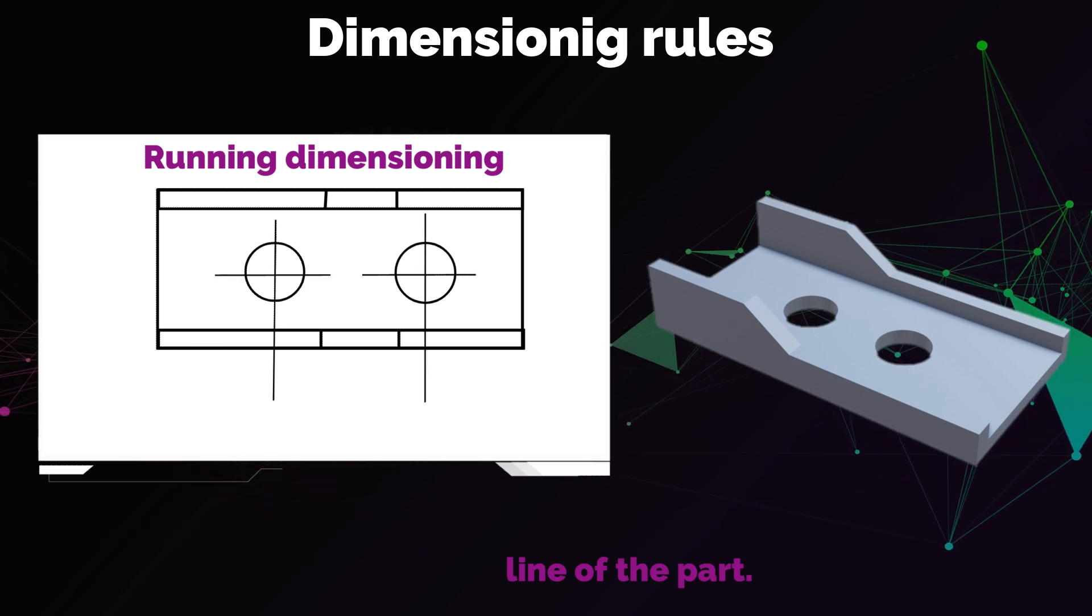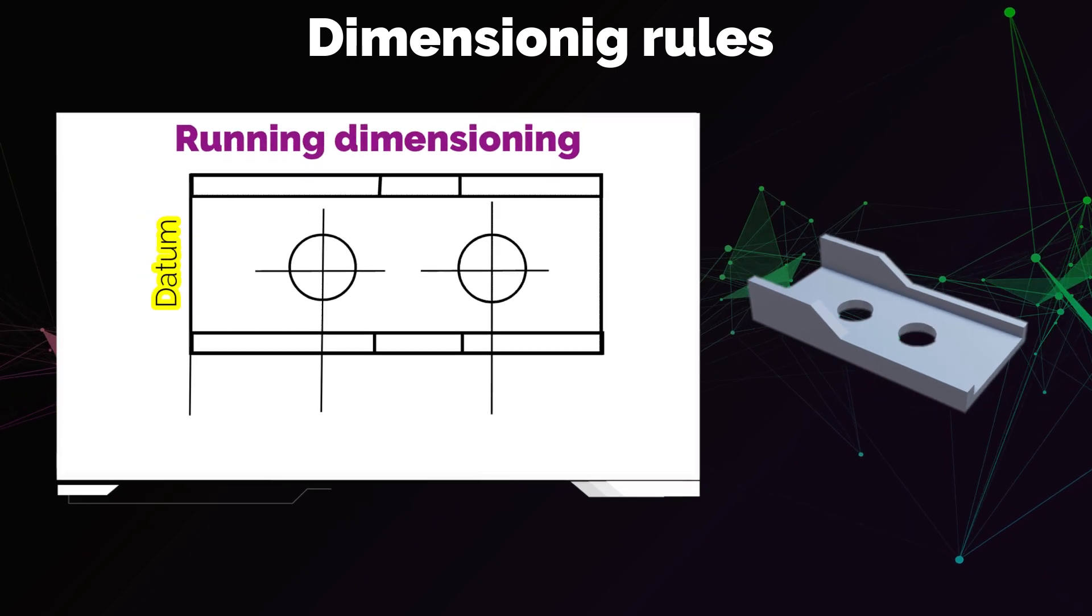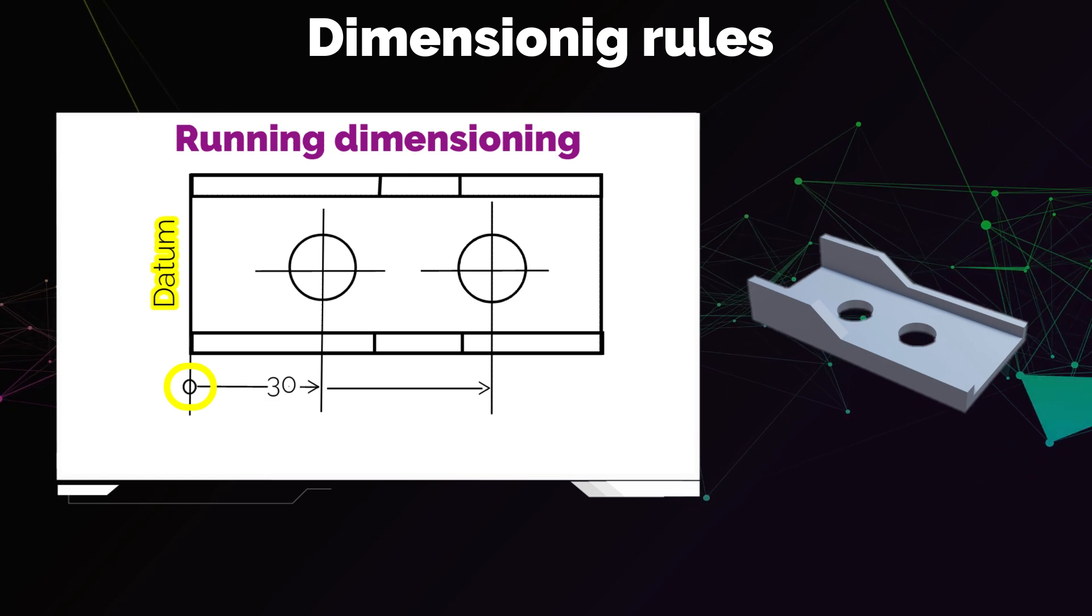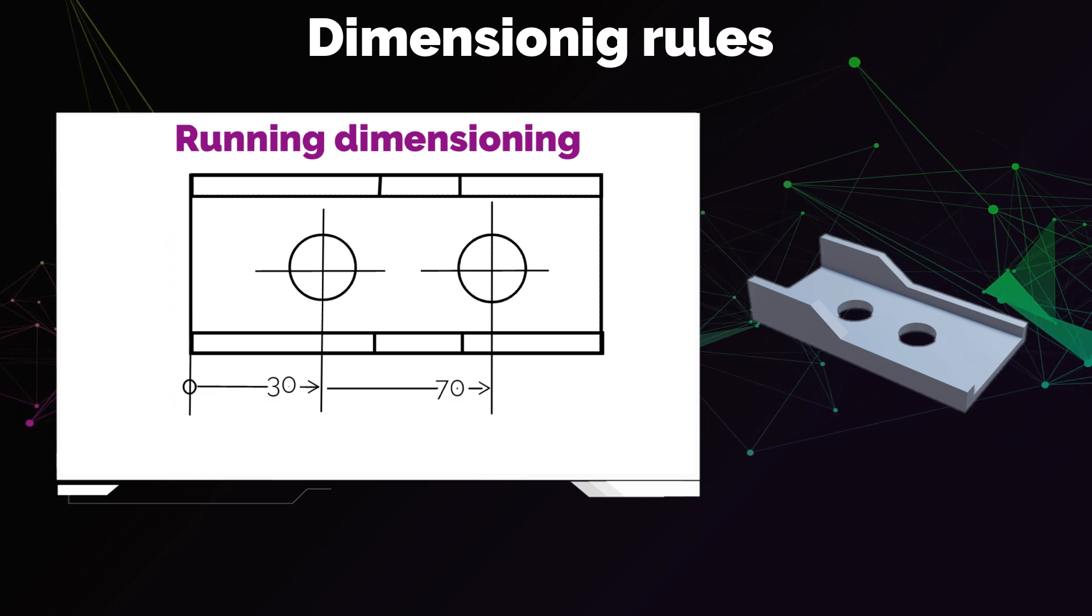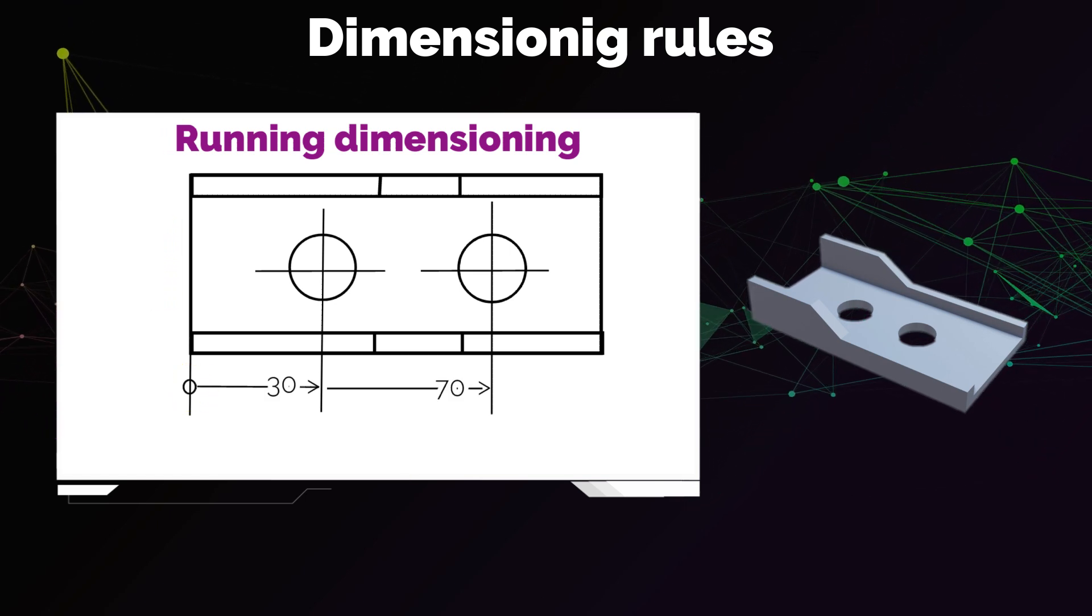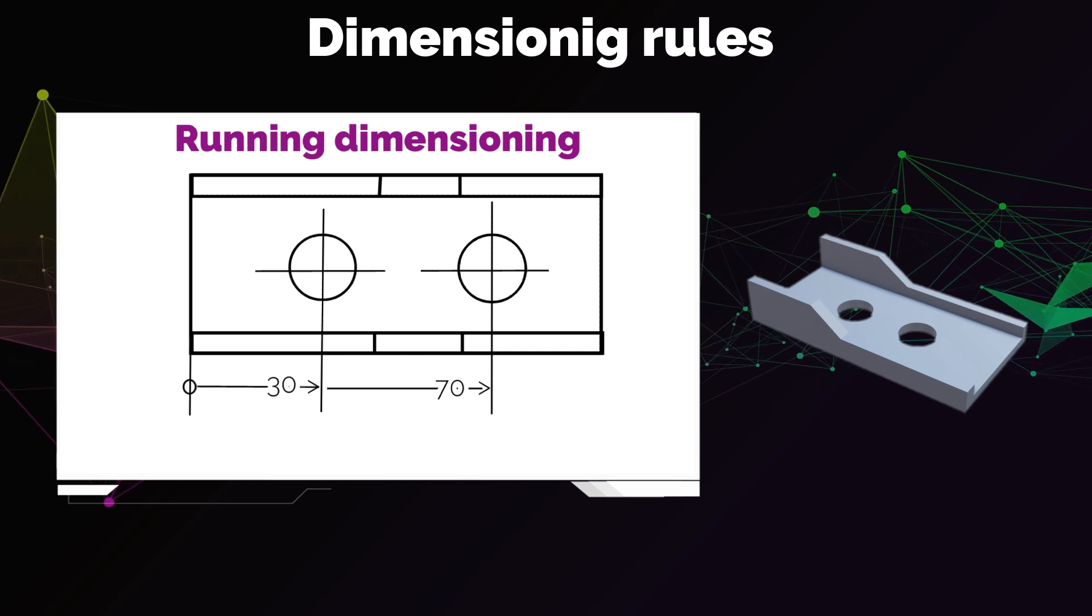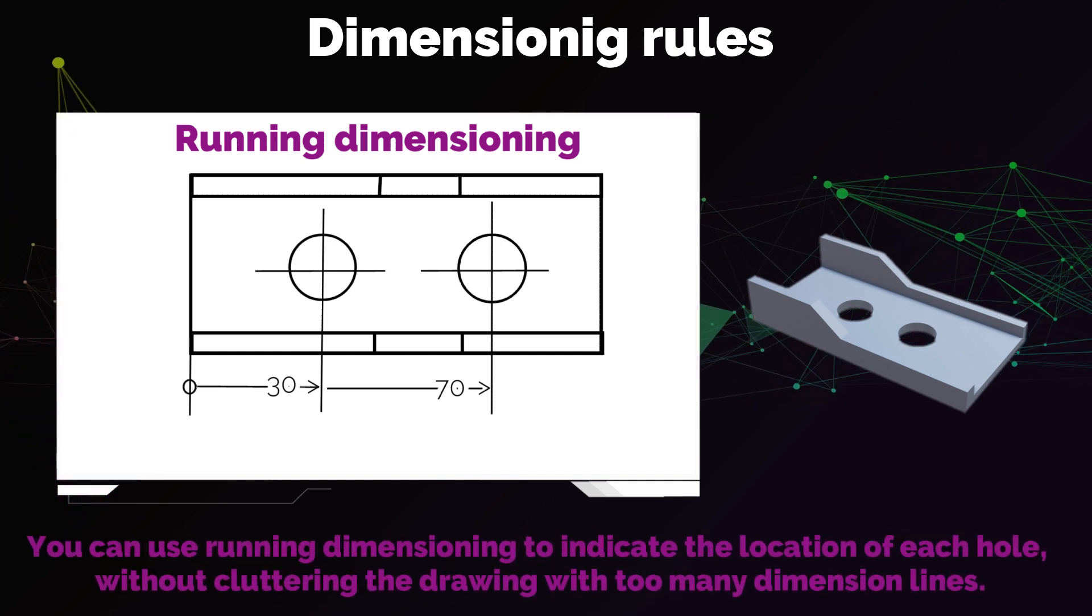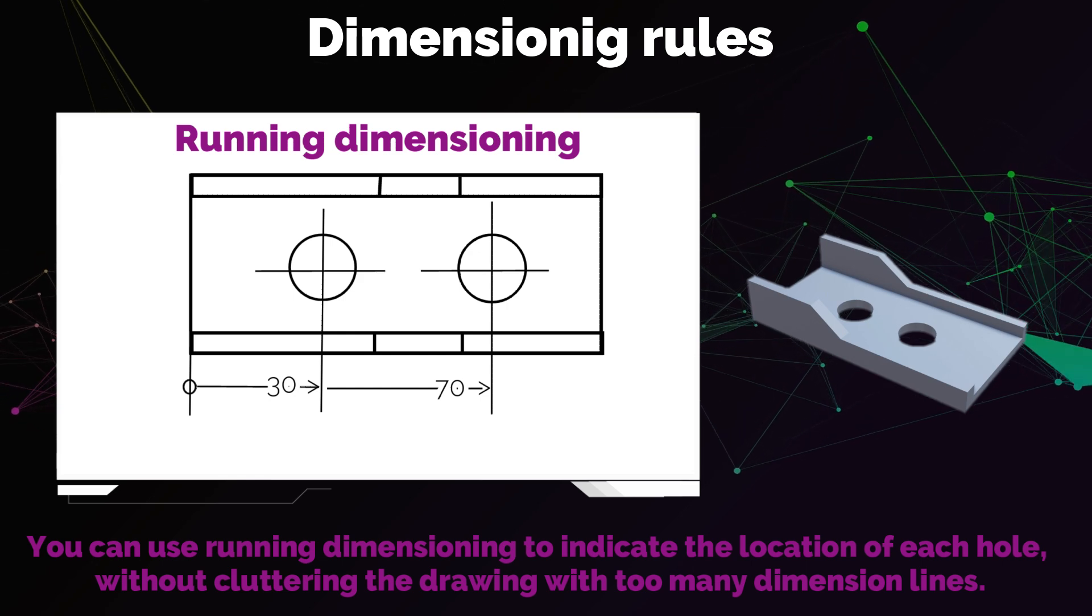In this case, the end of the dimension line which points at the reference feature is not an arrow, but a circle. The value of the dimension is placed near the arrowhead and not in the middle of the dimension line. As you can see in this example, you can use running dimensioning to indicate the location of each hole without cluttering the drawing with too many dimension lines.